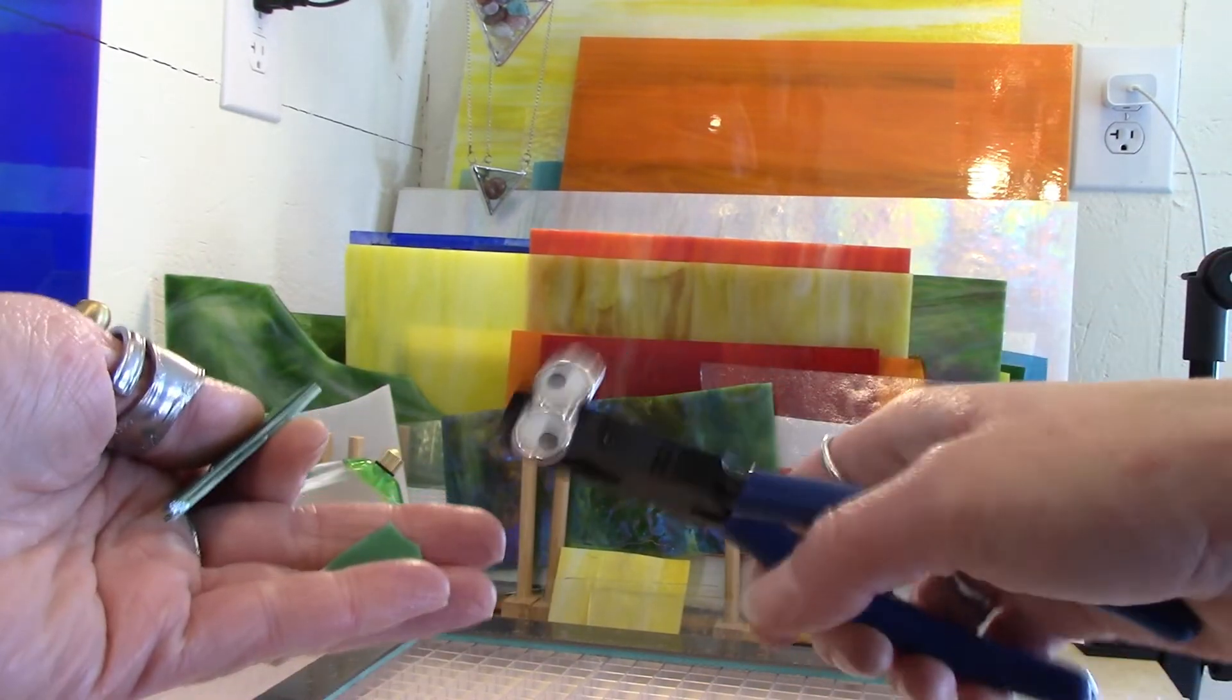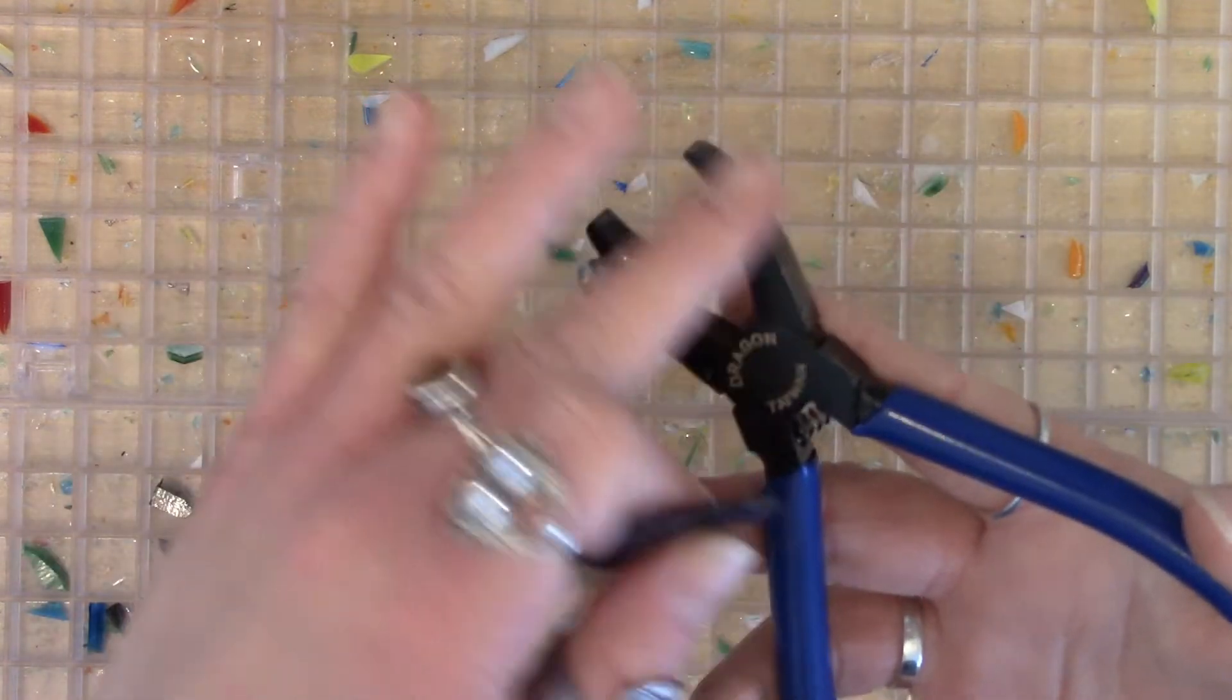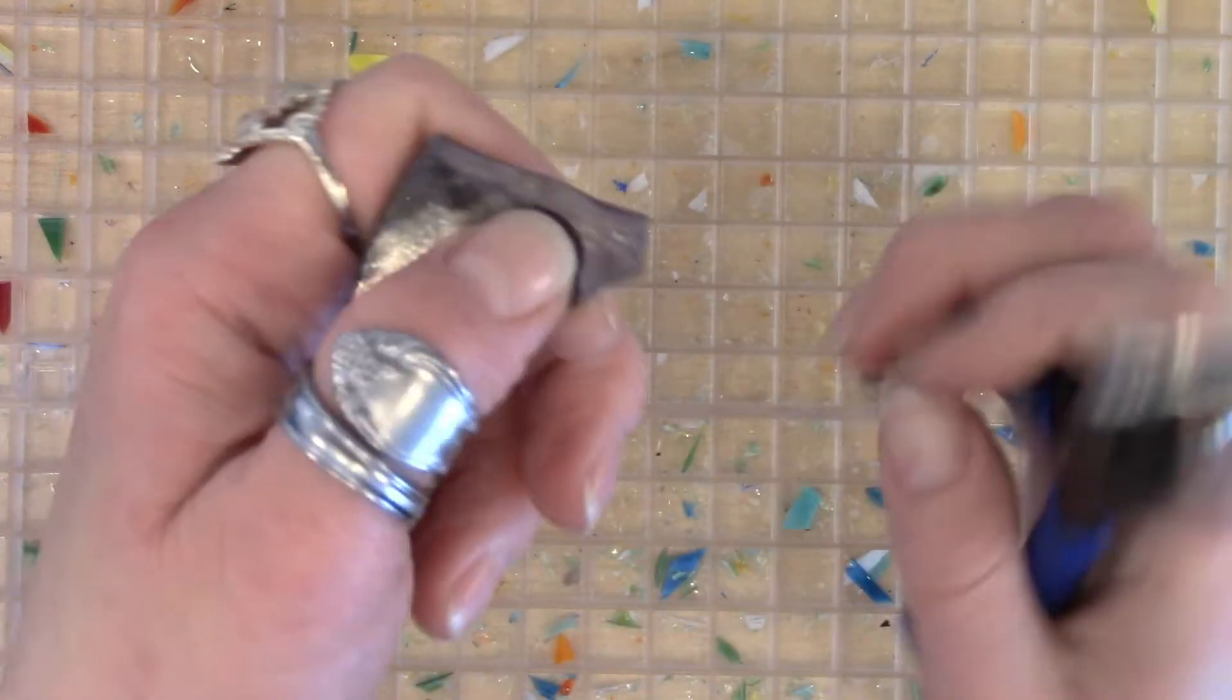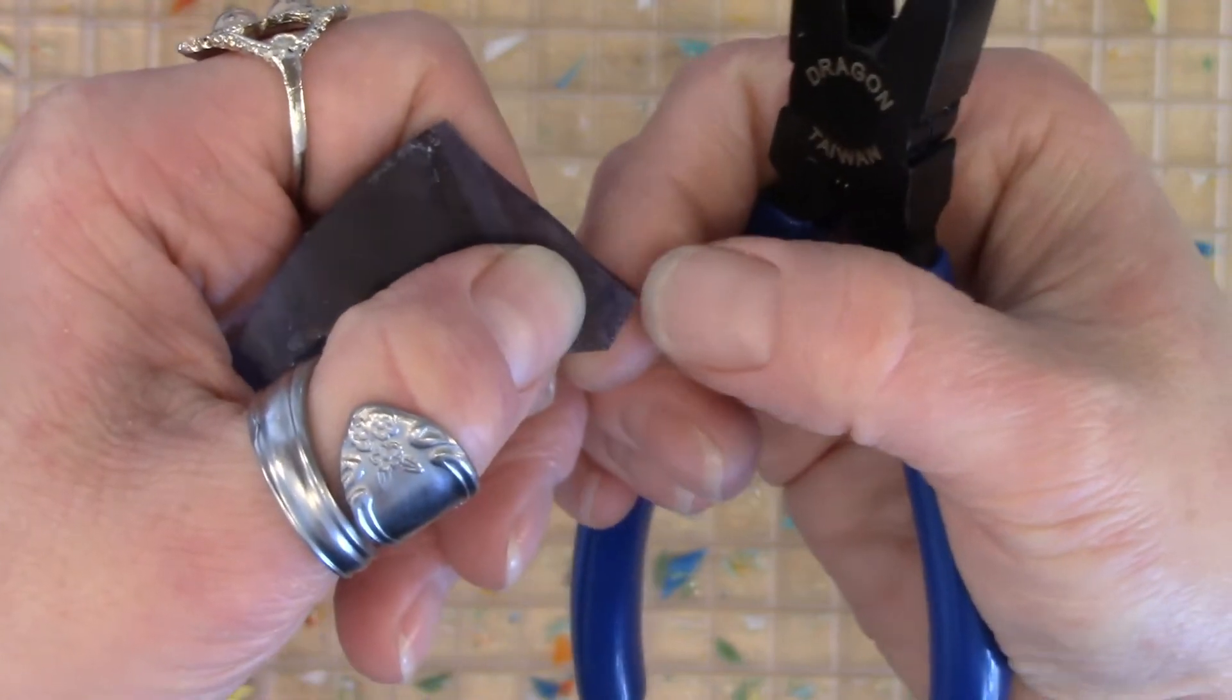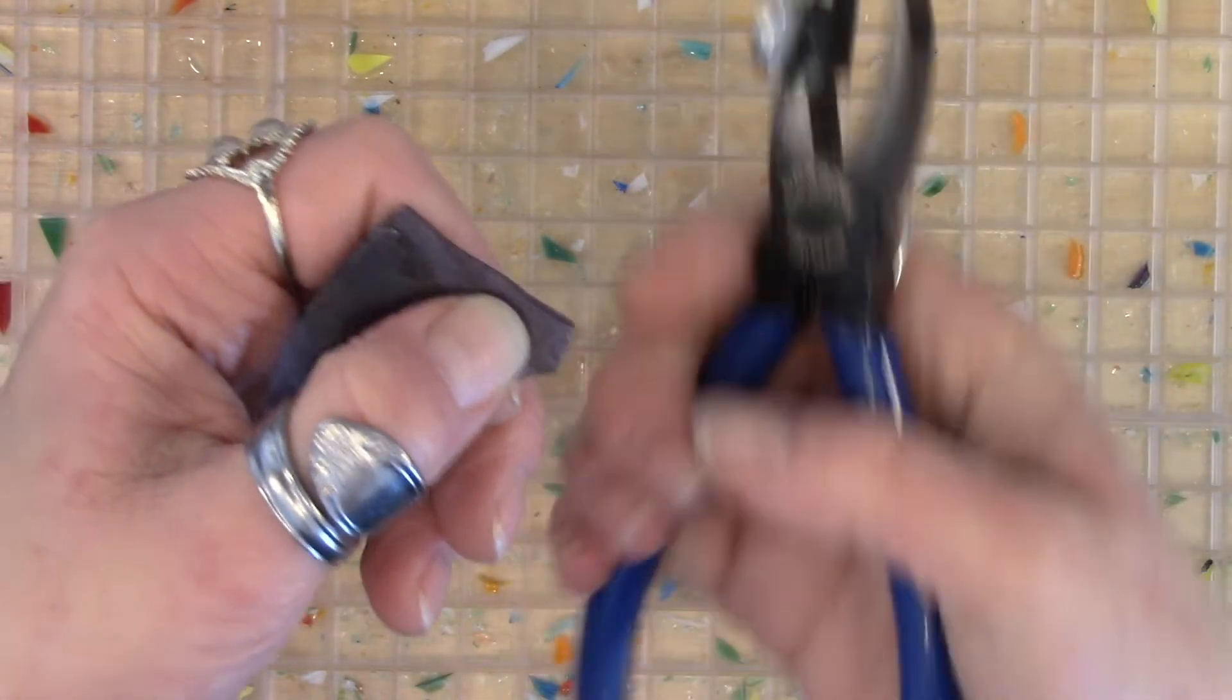Now we're going to move on to cookie monstering. You'll use the grozing or curved side of your pliers when you have really tiny pieces that you want to break off like this. What you'll basically be doing is chewing the glass off which is why I call it the cookie monster pliers.